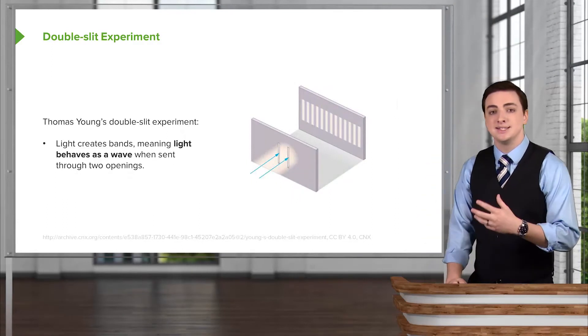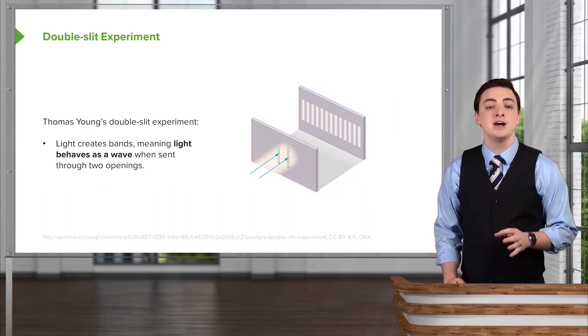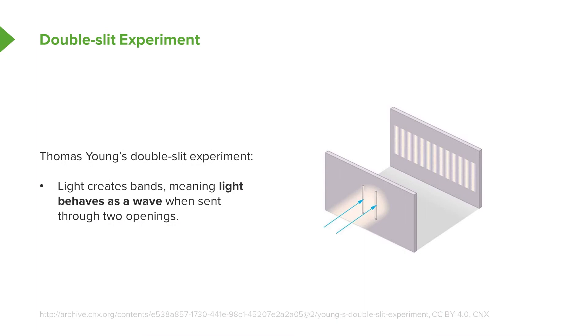So Thomas Young did exactly this. He sent light through these two slits, these two openings, to see what happens and found that light in fact behaved like a wave. Instead of getting two bright bands, he instead observed these many, many bands, which as we just discussed, comes from constructive and destructive interference of the light waves.